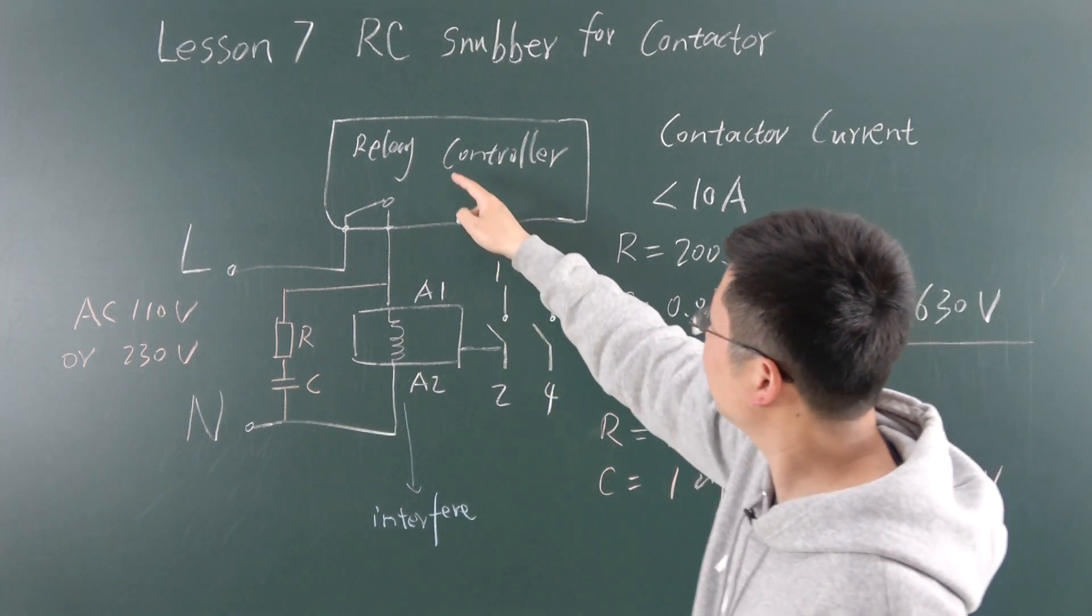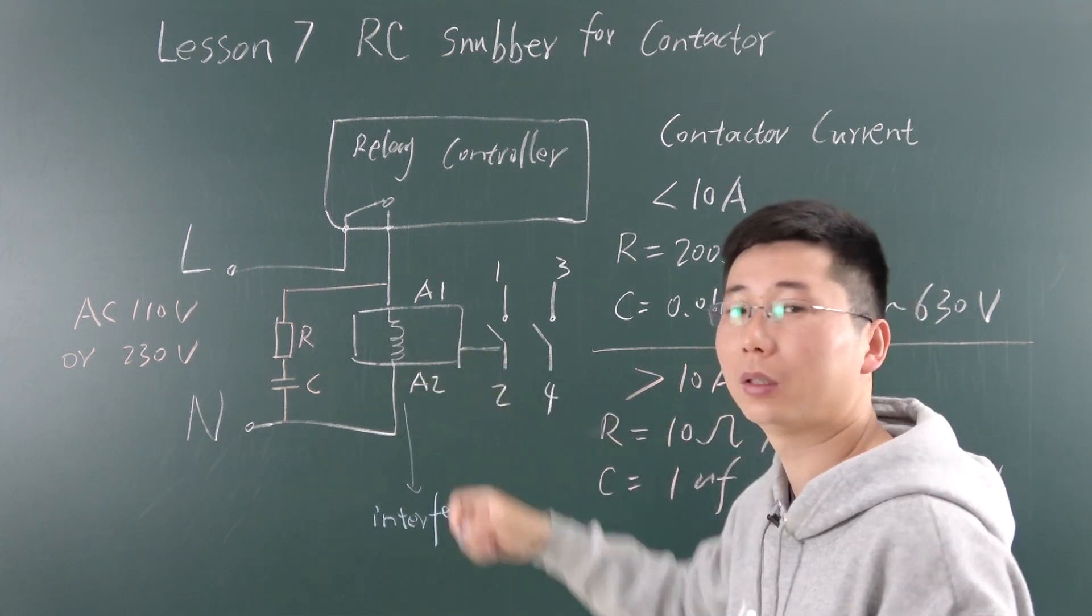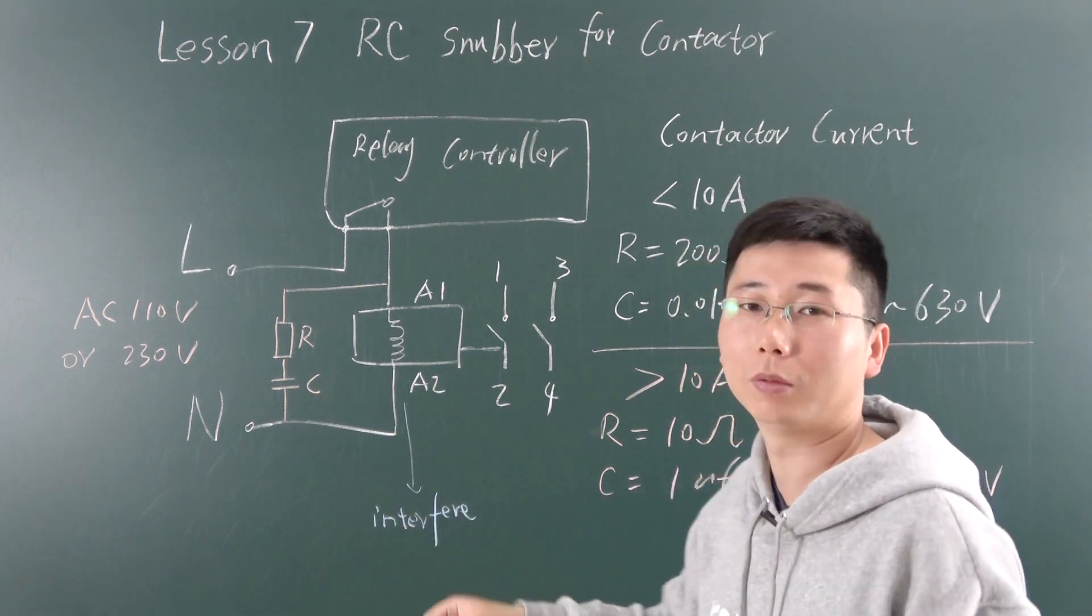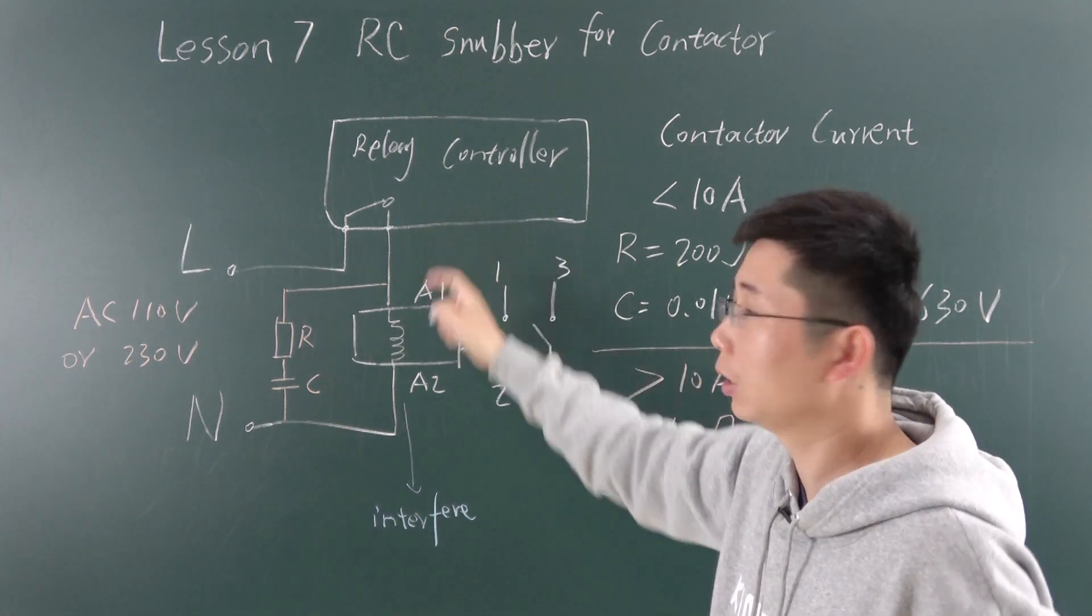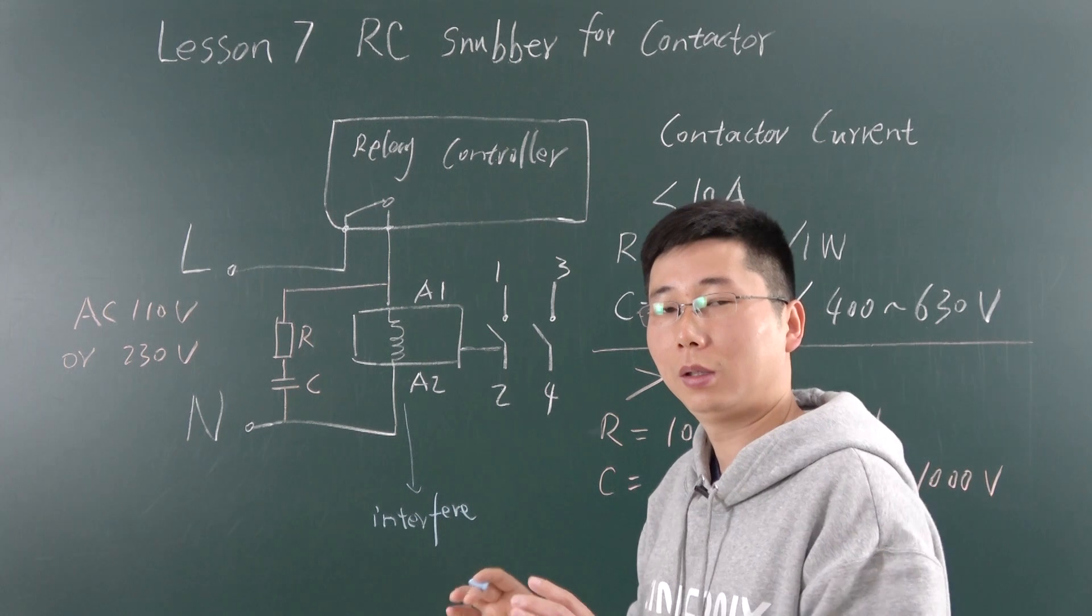When we use the relay controller to control the AC contactor, it will generate interference. This interference can affect other electronic devices, making the relay controller and other electronics unstable.